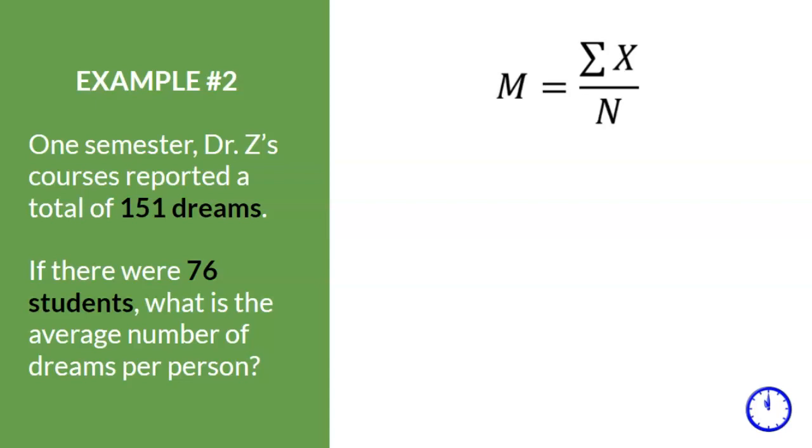Recall that sum of X is referring to all the scores added up together. In this problem, we were not given the individual scores, but rather we were given the total number of dreams, which means they did it for us.